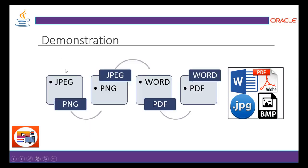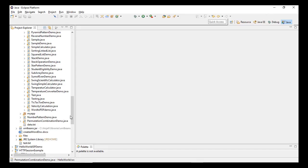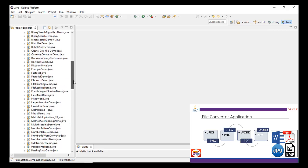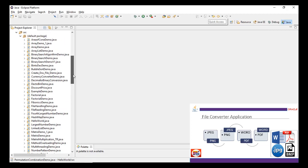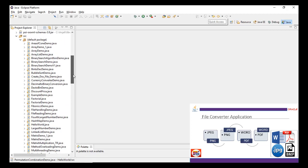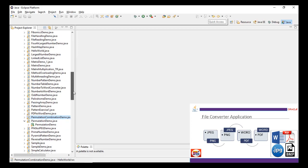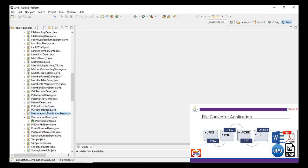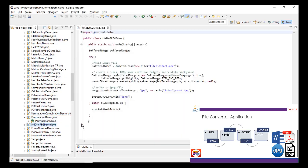For the demonstration, we are going to see a JPG file converted to PNG, or PNG to JPG, and similarly the Word to PDF and PDF to Word conversion. Now let's take a look at the execution. This is my IDE and here I have the program. Let's start with the image converter — we have to see the PNG to JPG demo.